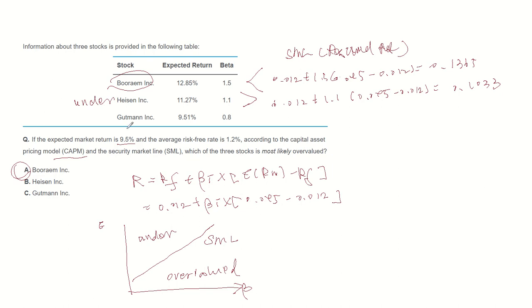For Gottman, required return becomes 0.012 plus beta is 0.8, multiplied by 0.095 minus 0.012, becomes 0.0784. So expected return is bigger, so Gottman is also undervalued.